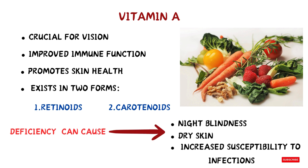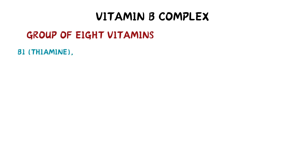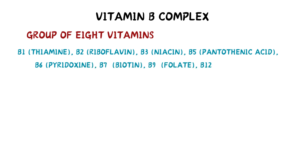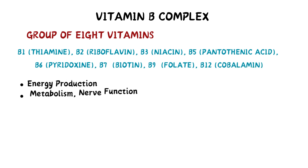Vitamin B complex vitamins have diverse roles and are a group of eight vitamins: B1 known as thiamine, B2 as riboflavin, B3 known as niacin, B5 pantothenic acid, B6 called pyridoxine, B7 or biotin, B9 or folate, and B12 or cobalamin. These vitamins are important for energy production, metabolism, nerve function, red blood cell formation, and DNA synthesis.